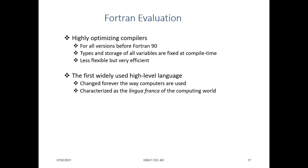This 'less flexible but very efficient' concept is also common in Python's Django framework — Django limits what you can do, guiding you to do things a certain way, and the resulting project becomes very efficient. This is one advantage shared by FORTRAN and Python with Django.